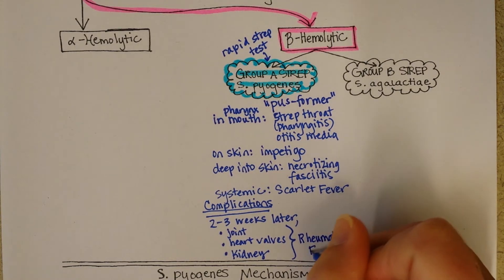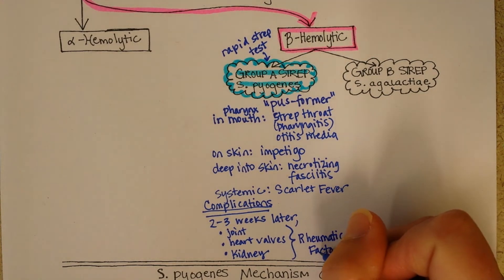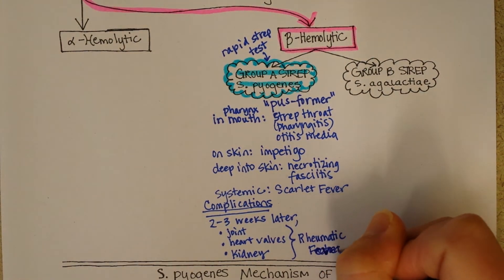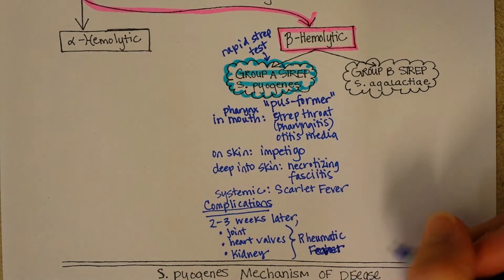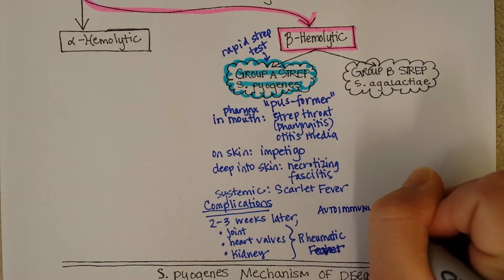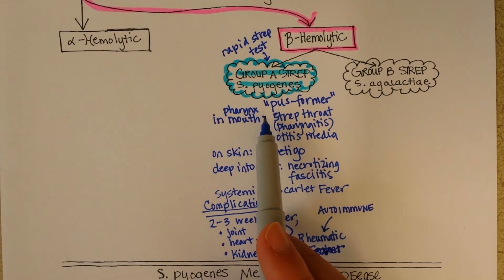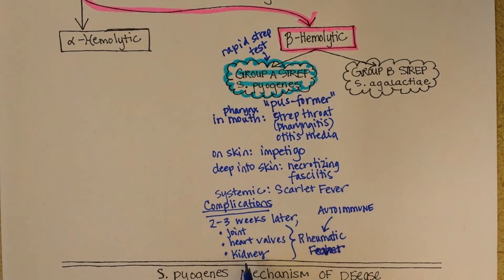It's a very old name because what was most apparent a hundred years ago would have been the joint pain — rheuma means joint — hence rheumatic fever. This is autoimmune because the antibodies the body made to Streptococcus pyogenes also match joints, heart valves, or parts of the kidneys. It may or may not happen depending on the type of antibody the person makes, and also depending on the strain of the Streptococcus — some strains are more likely to cause this.